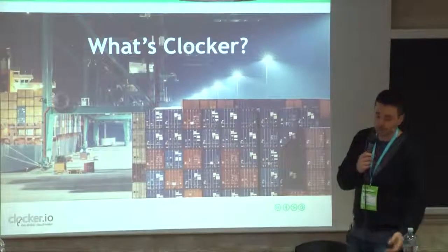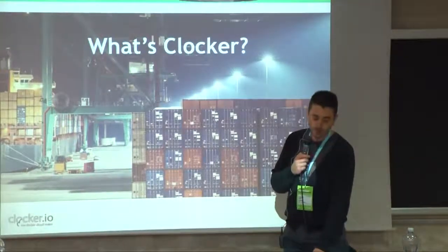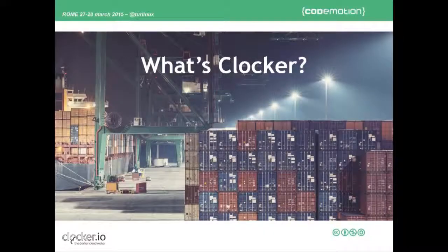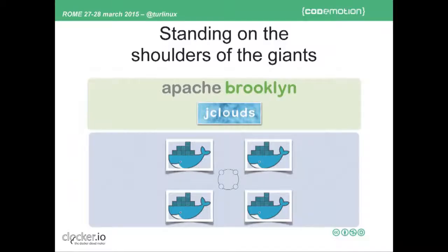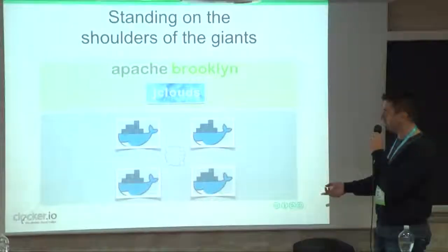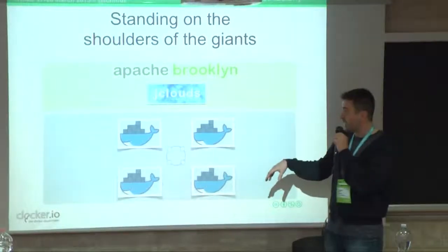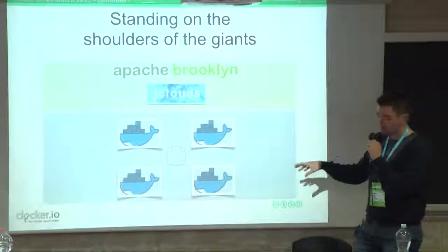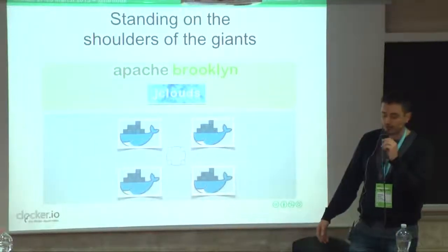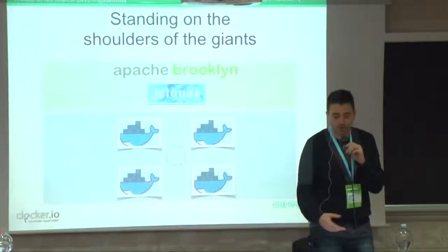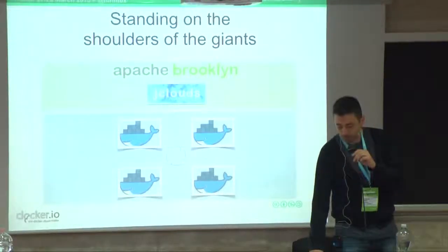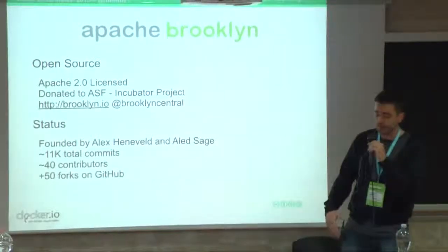The best way to explain what Clocker is starts from a description of the technology stack. There are four main technologies that compose the Clocker solution. At the core there's Apache Brooklyn, which leverages another Apache project called jClouds. Together, they interact with a cluster of Docker engines deployed in whatever environment is supported by jClouds, and those Docker engines are interconnected using a software-defined networking solution.